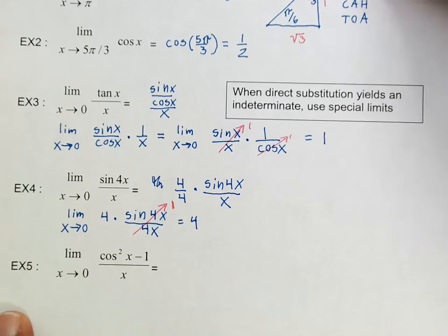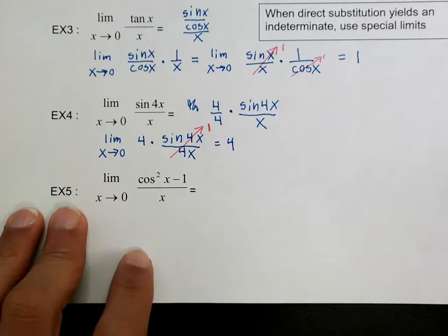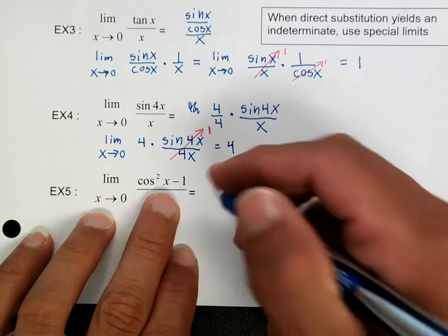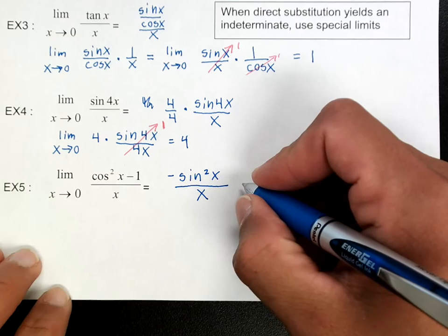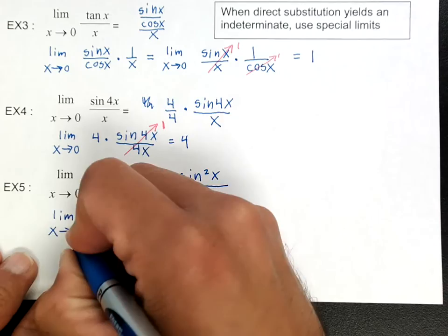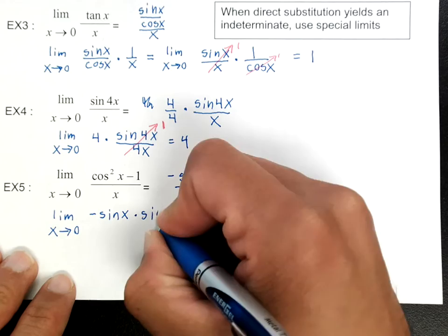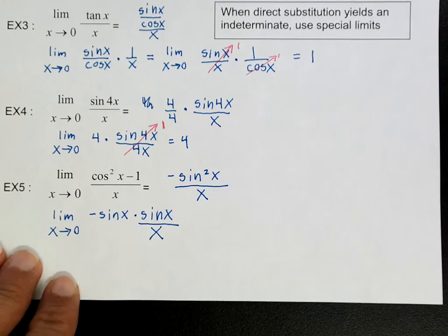Now finally, on example 5, you can do this two ways. You can say this is the difference of squares, or you can use your trig identities and say that cosine squared x minus 1 is the same thing as negative sine squared x over x. And if that's the case, then I can rewrite this. I'm going to write this as the limit as x goes to 0 of negative sine x times sine x, all of that over x, which I can rewrite it like that.